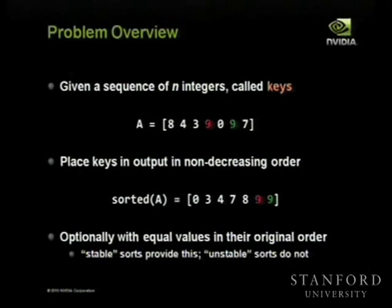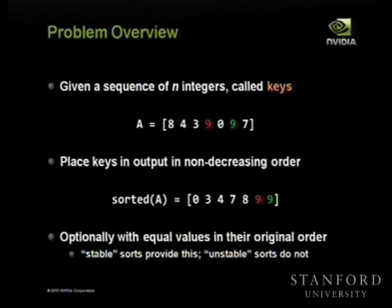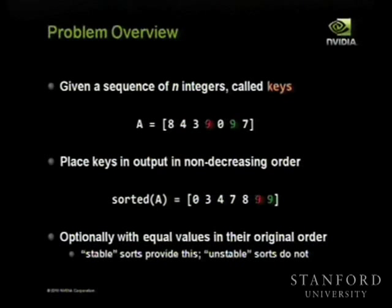First I want to define what kind of sorting problem I want to talk about today. I want to talk about a fairly simple kind of sorting problem: given some sequence of integers, which I'm usually going to refer to as keys, we want to shuffle them around so that they're in non-decreasing order. Optionally, you might want the sort algorithm to preserve keys of equal value in their original order — that's called a stable sorting algorithm. Unstable sorts might potentially reorder equal keys.